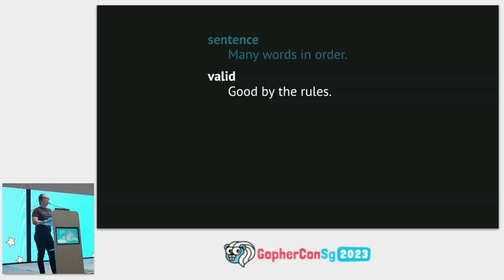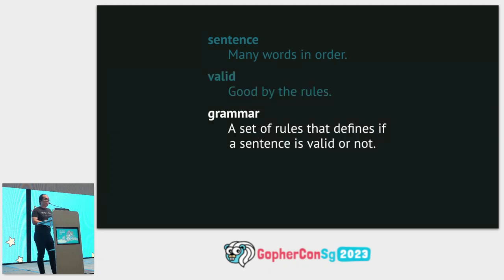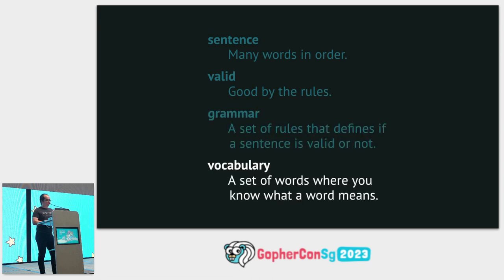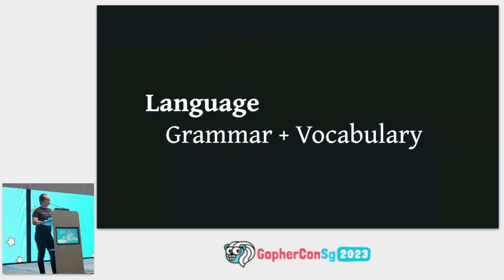Valid means good by the rules. A grammar is a set of rules that defines whether a sentence is valid or not. A vocabulary is a set of words where you know what the words mean. A language is made up of a grammar and a vocabulary.